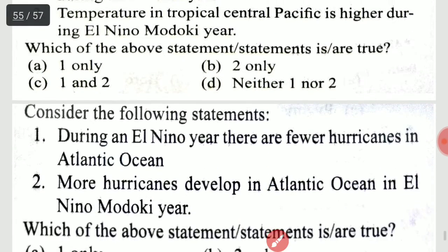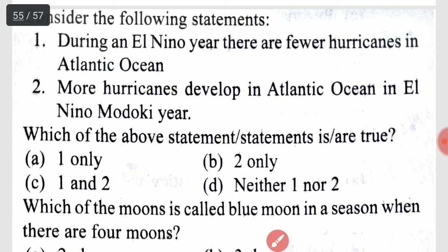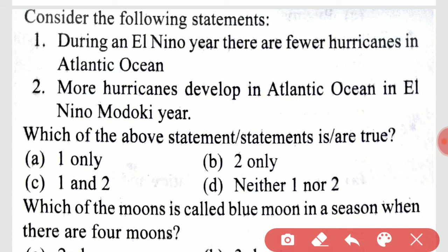Consider the following statements about El Niño: during an El Niño year, there are fewer hurricanes in the Atlantic Ocean; more hurricanes develop in the Atlantic Ocean during El Niño. The answer is 1 and 2 — both are correct.